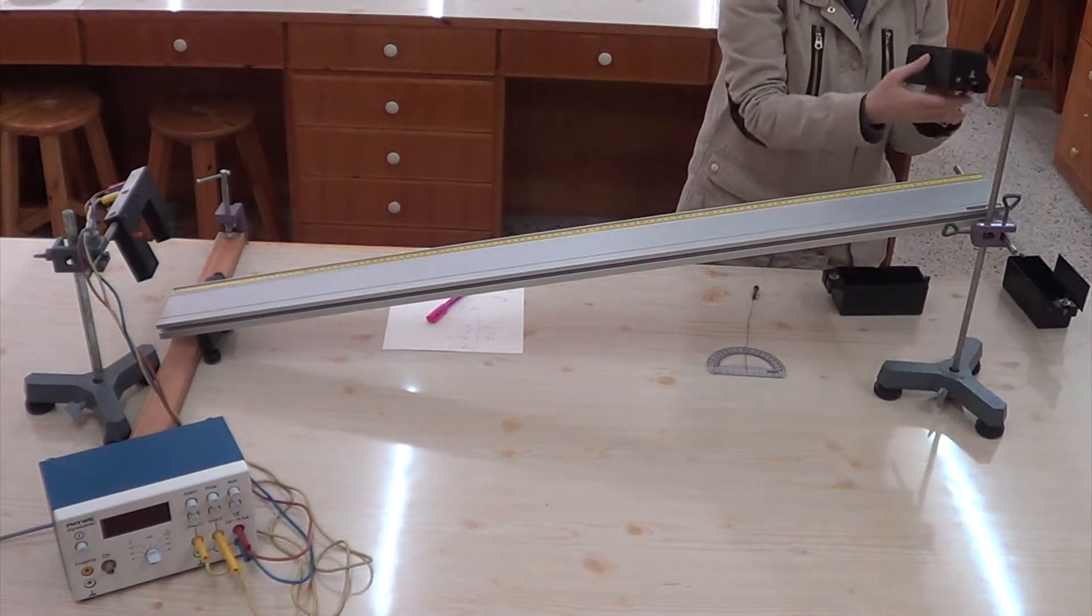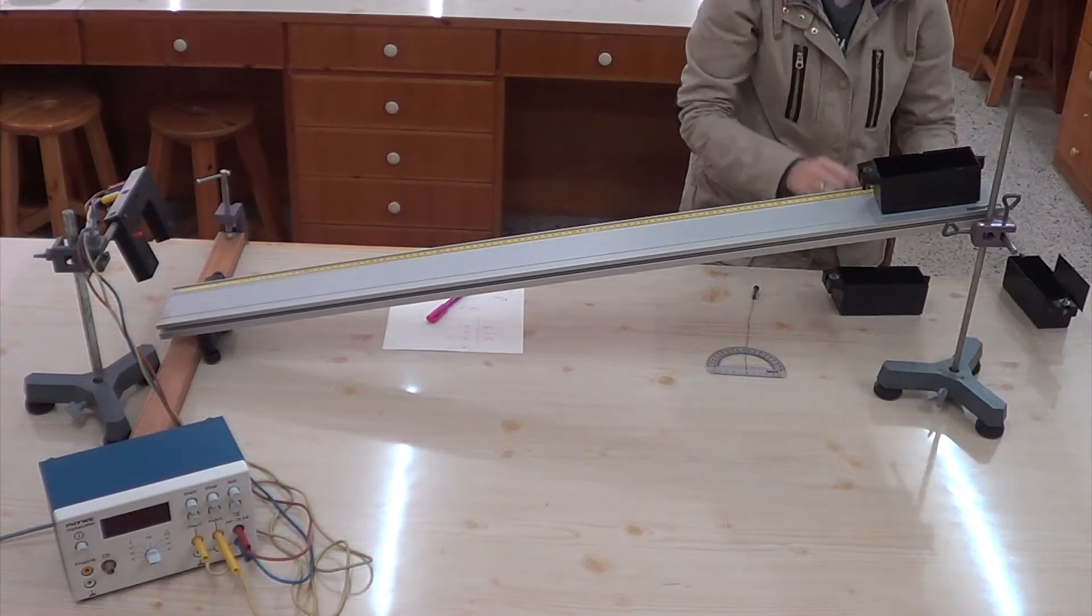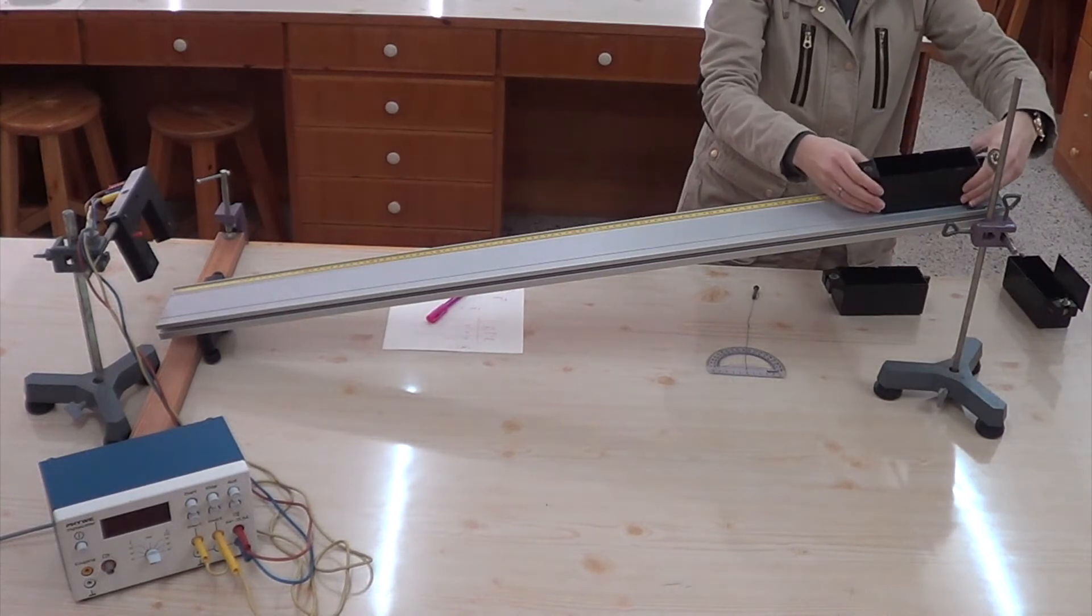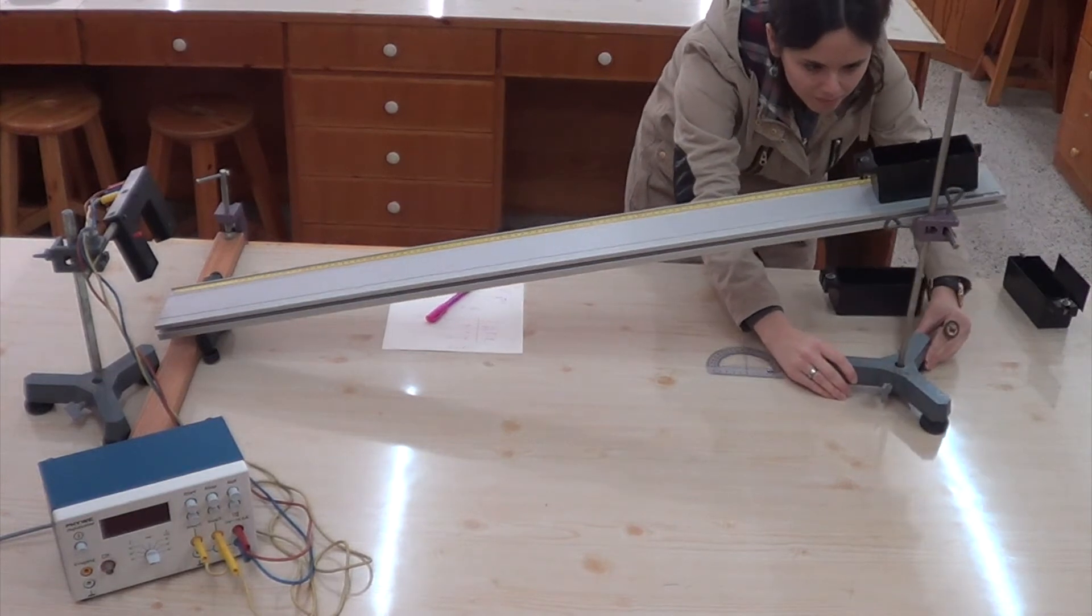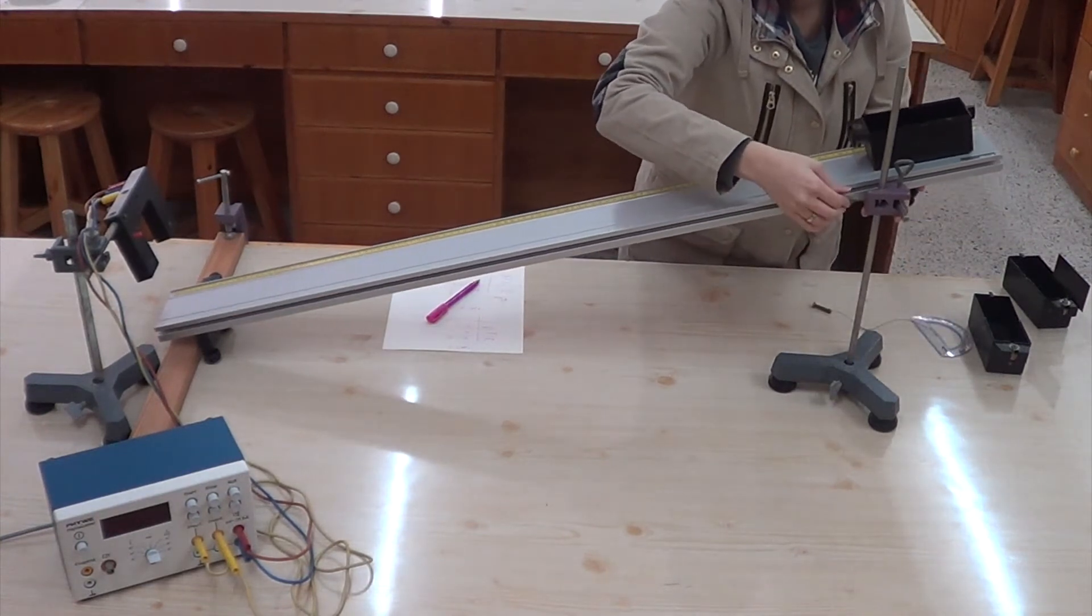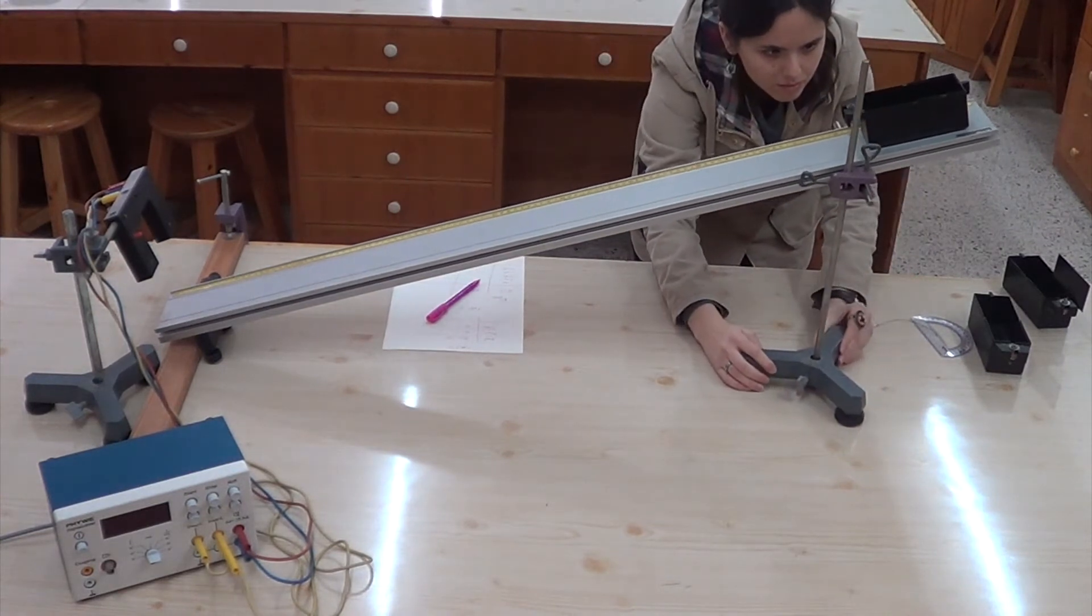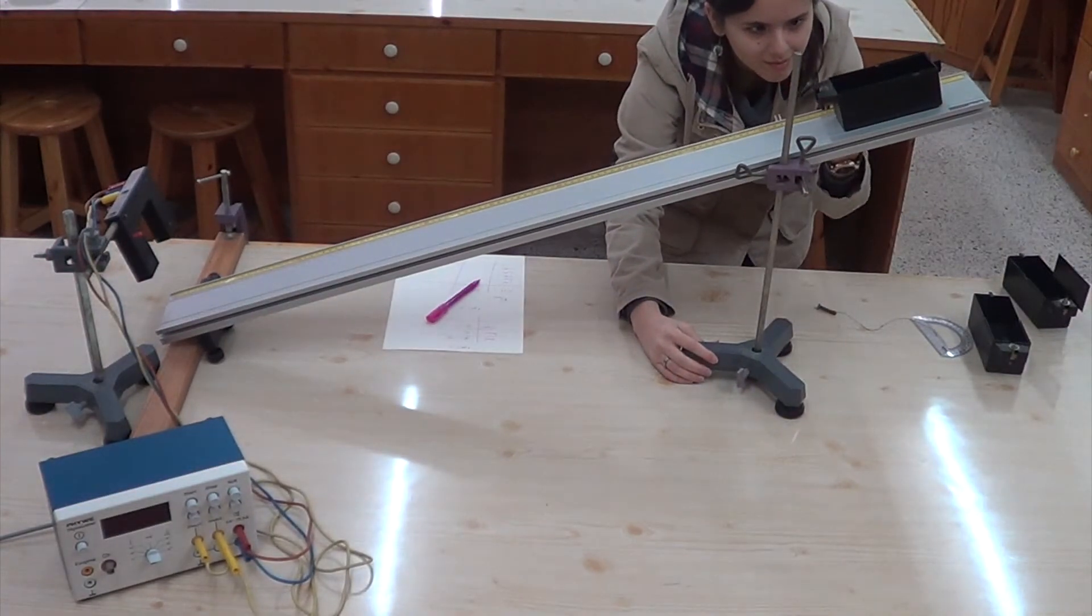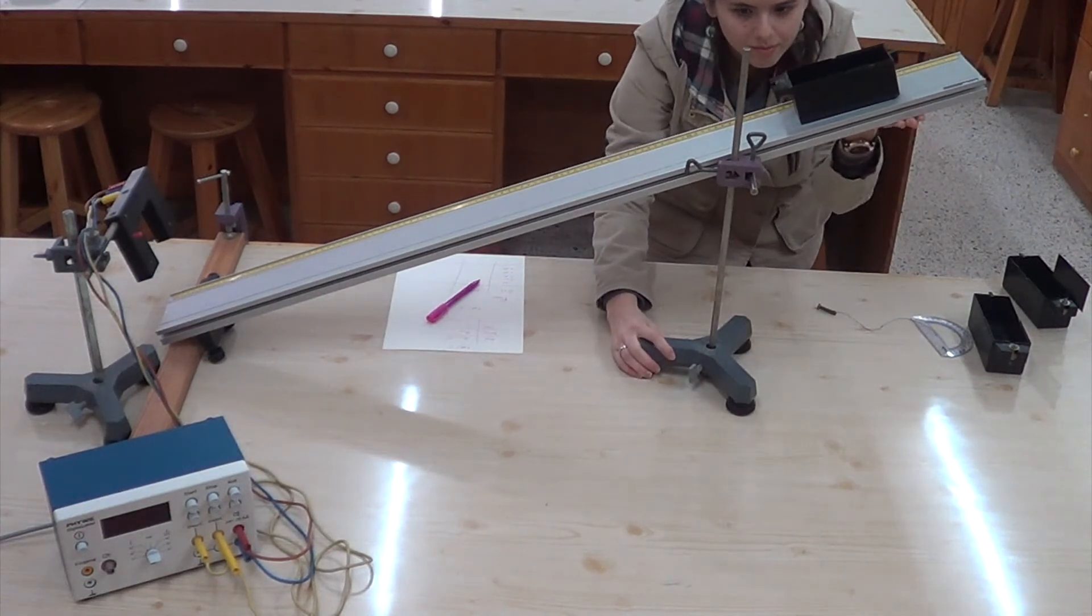You shall now repeat the same procedure for fabric. For being able to obtain the critical value for the new material, you need to readjust the height at which your object will just start moving. Achieving this may take a while. Now, measure the critical angle for fabric and record it.